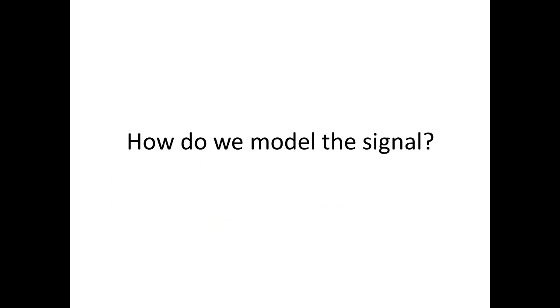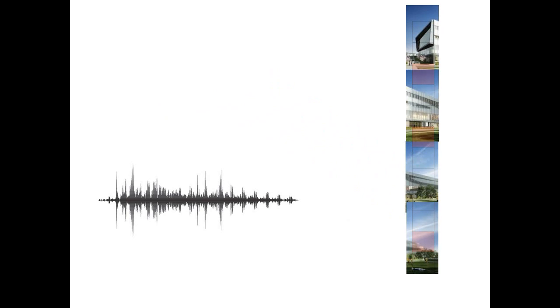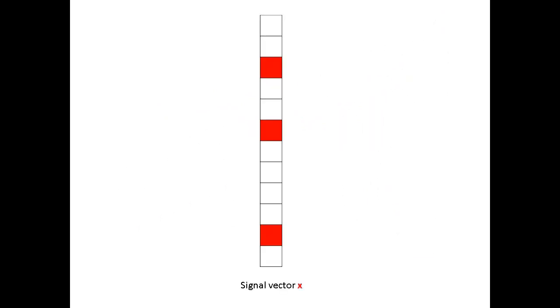The data is some sort of signal. How can we model this signal? The signal is composed of numbers, and we model it as a vector. The entries of the vector could be pixels of an image or frequency components of audio. We call the signal vector x.